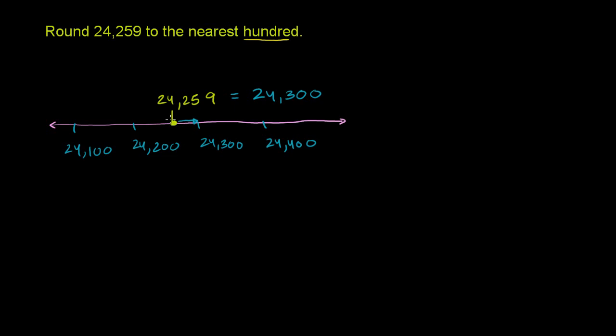An easier process, or maybe a more mechanical process, is you literally look at the number. Let me write it down again: 24,259. We want to round to the nearest hundred.